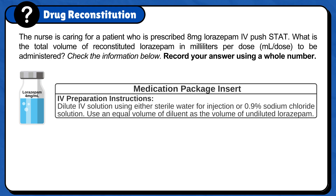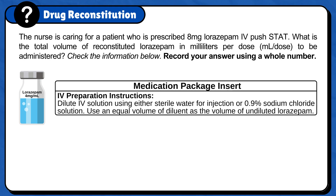The IV preparation instructions are: dilute IV solution using either sterile water for injection or 0.9% sodium chloride solution. Use an equal volume of diluent as the volume of undiluted lorazepam.